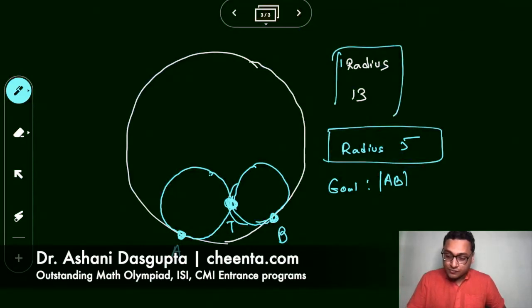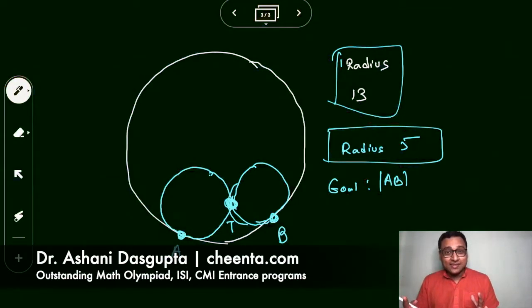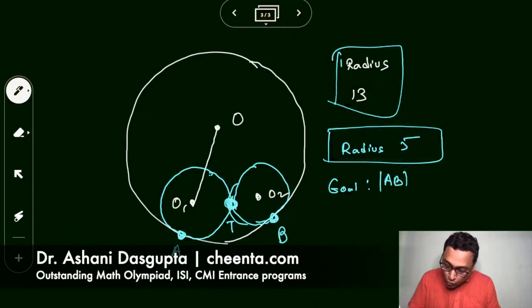Let's see how we can do it. So whenever you are dealing with circles and tangencies, here is a trick: you should always mark the centers of the given circles. They almost always come in handy. So this one is O, suppose, and this one is O1, this one is O2. Now using the tools we know, a bunch of things. For example, we know that O, O1, O2 are on the same straight line - this is by the collinearity of centers property.